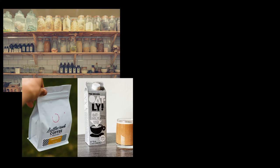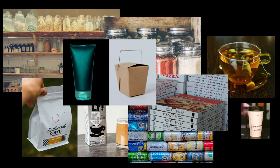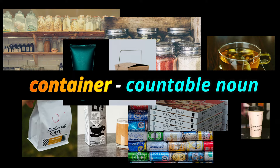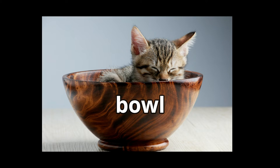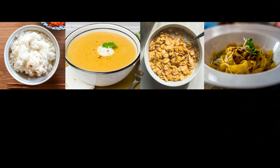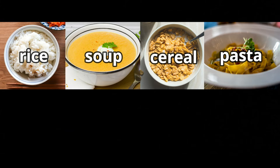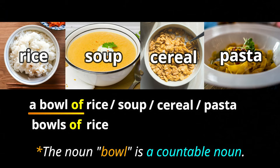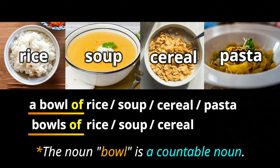For other uncountable food nouns, we use containers — we can count containers. A very common container is a bowl. Four very common uncountable food nouns are rice, soup, cereal, and pasta, and all of these can be counted using a bowl. We say a bowl of rice, a bowl of soup, a bowl of cereal, or a bowl of pasta. Or we can count the bowls — bowls of rice, bowls of soup, bowls of cereal, or bowls of pasta.